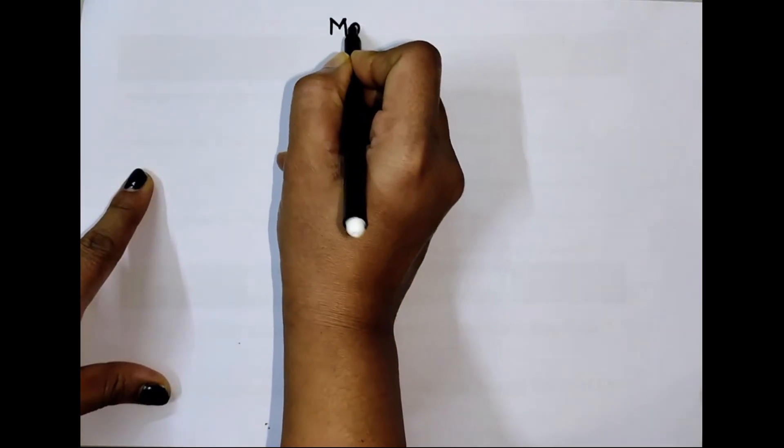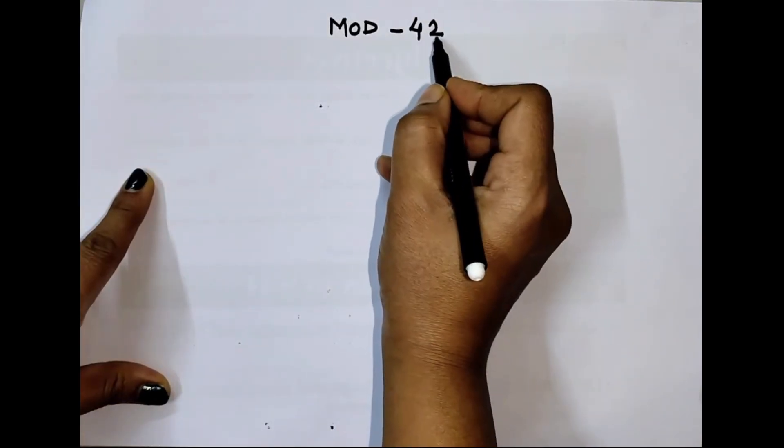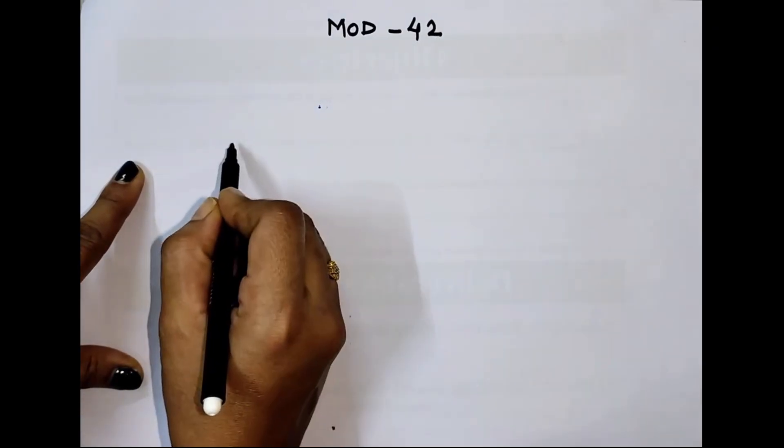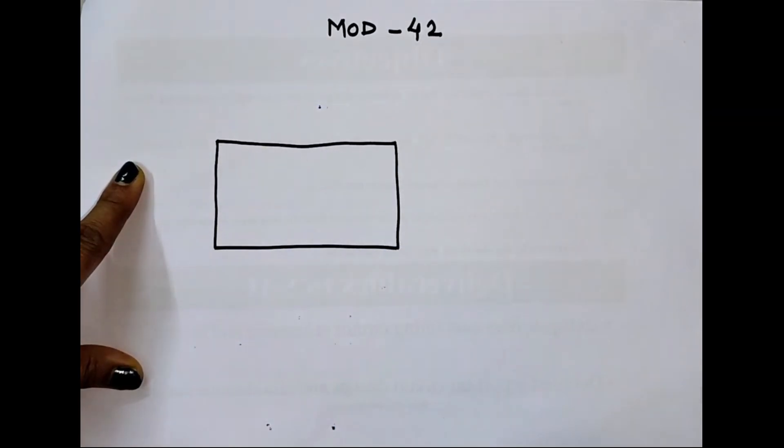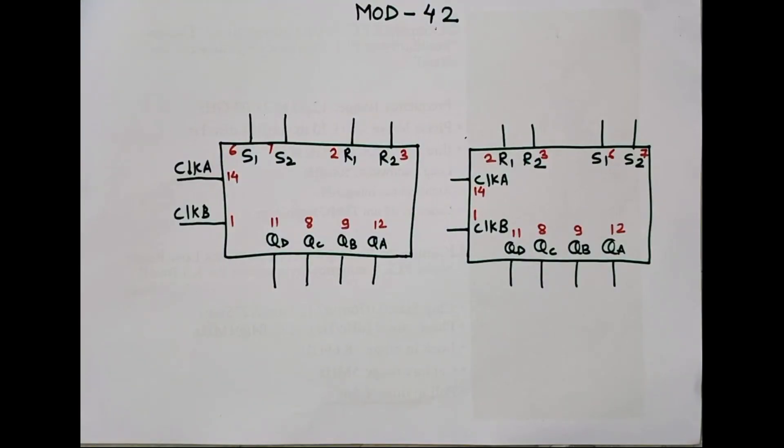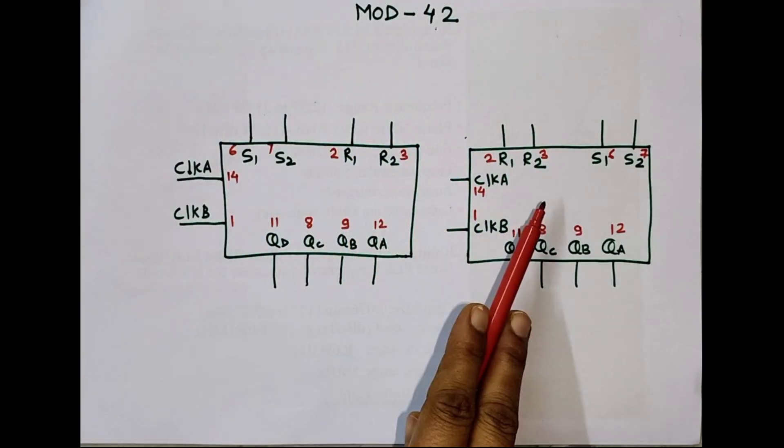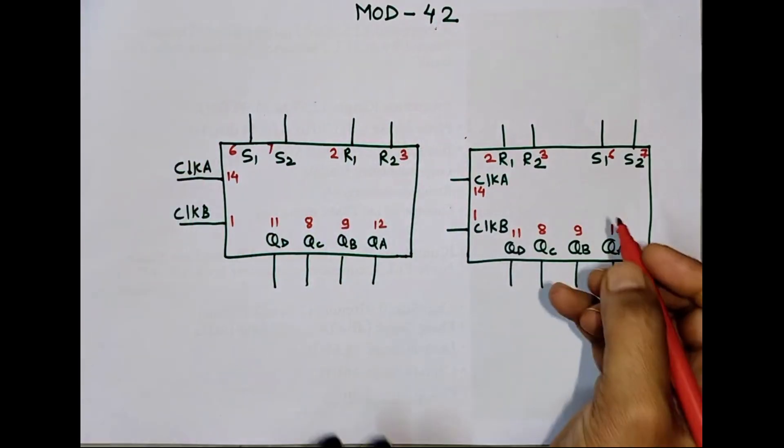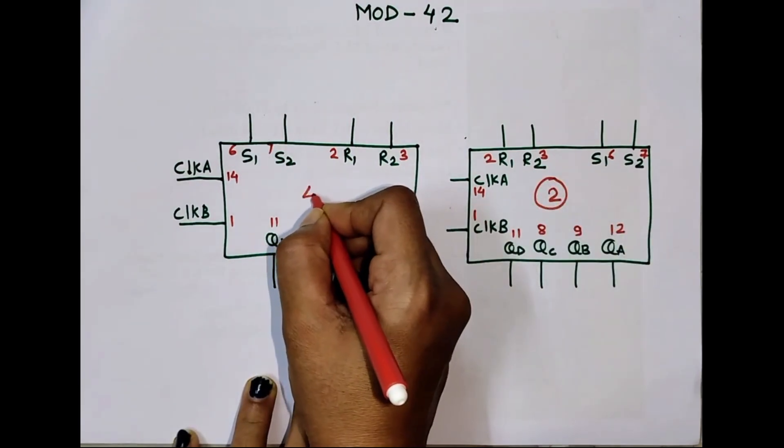I'll take a simple example of, let's take an example of MOD-42 counter. So here we need to take one IC for 2, we need to take another IC for 4. So I'll draw two ICs. Here to implement MOD-42, we need two ICs. So I have taken two ICs.